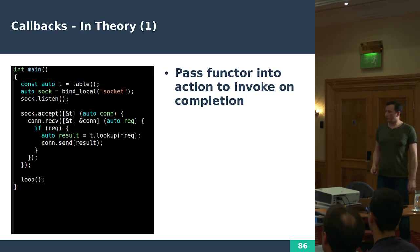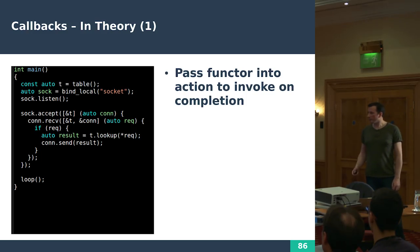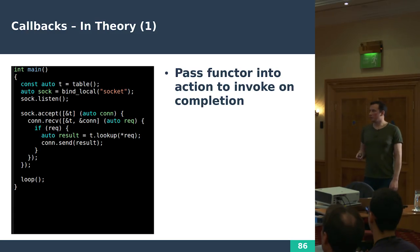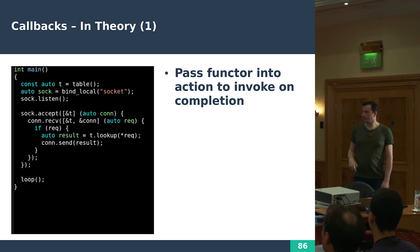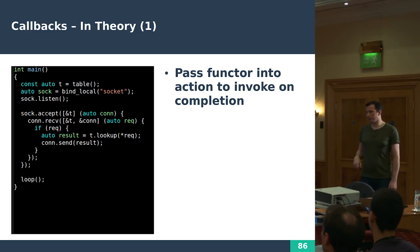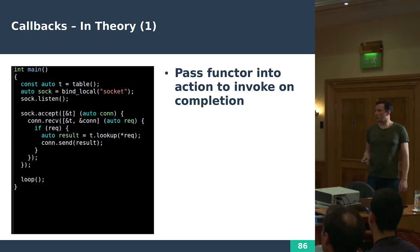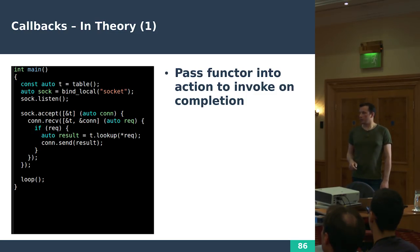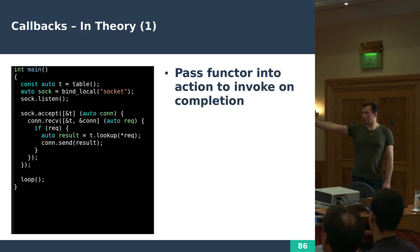Instead of returning the file descriptor, ePoll can return the pointer you gave it — which lets you avoid the file descriptor lookup and makes your code simpler. In theory we want to write callbacks like this: in our accept operation, we say 'when accept is done, do this callback,' and thanks to lambdas we can write it inline. In the past we'd have had to define a function and pass it in. Then we do the same with receive: on receive, when the receive is finished, do that.